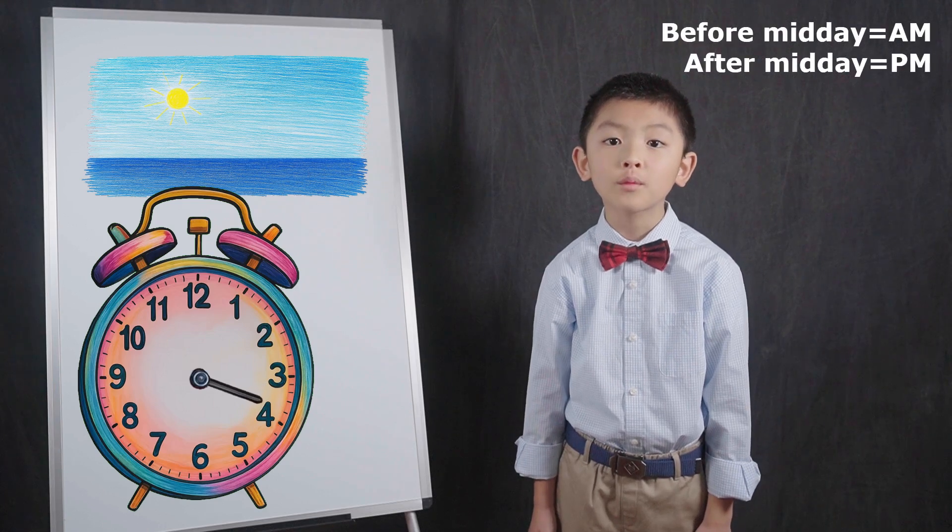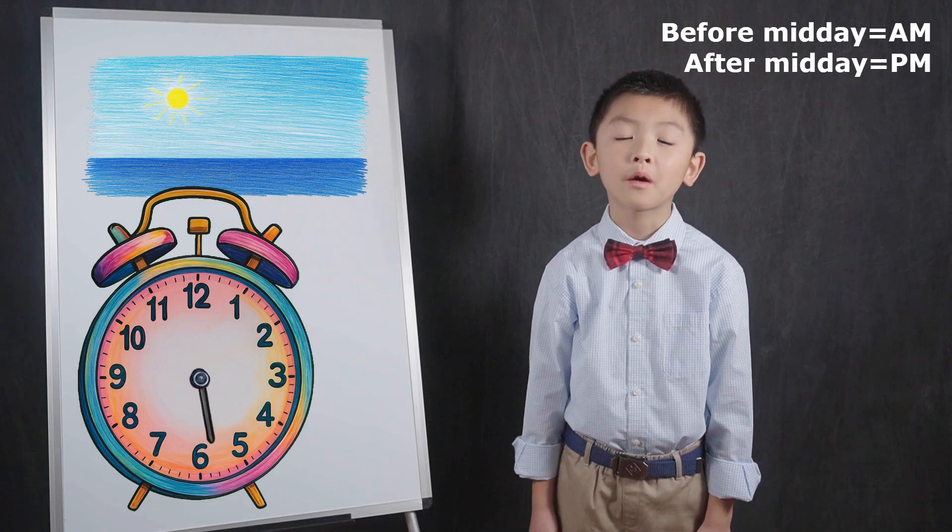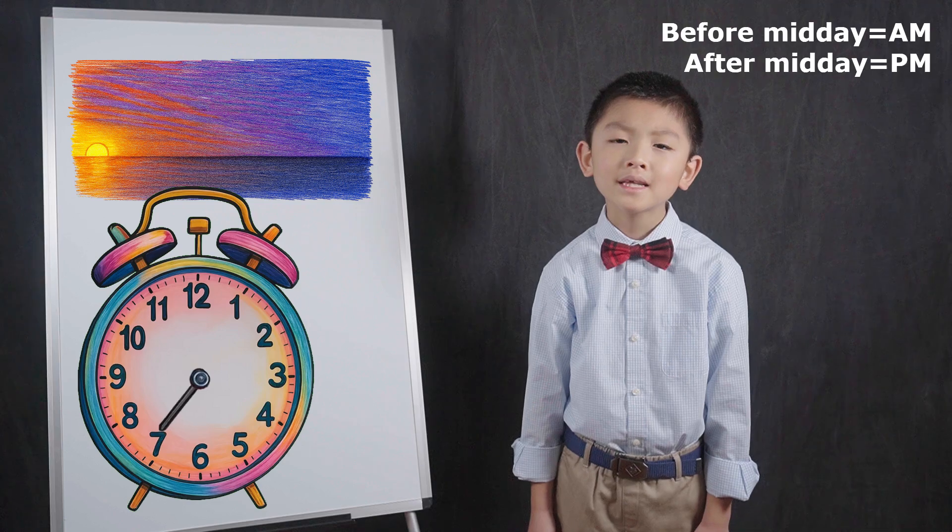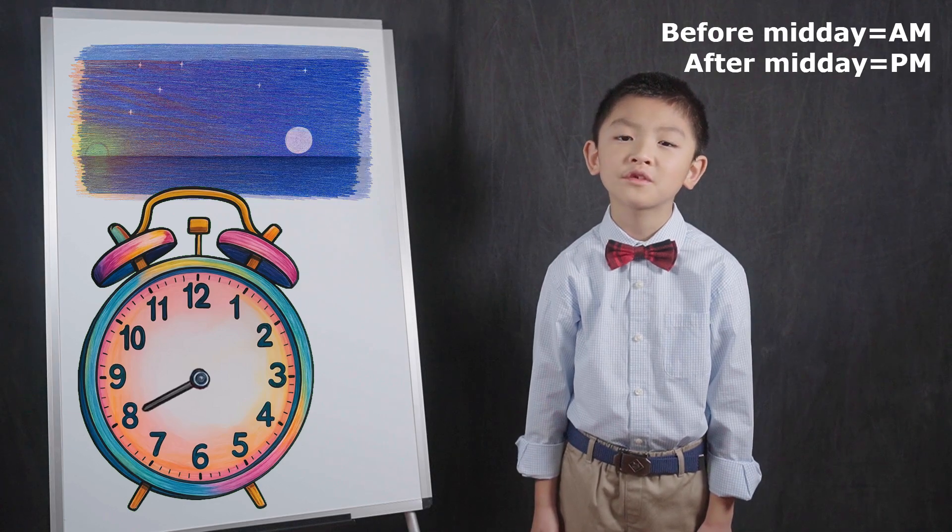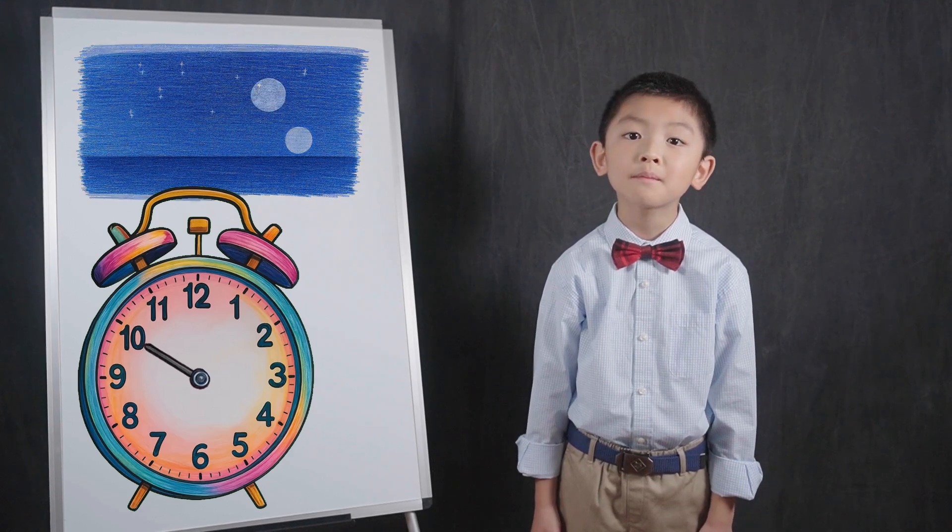AM means before midday, and PM means after midday. So, you read a 12 hour clock the same way as a 24 hour clock, except that you also need to state whether it is before midday or after midday. Let's practice with a few examples.